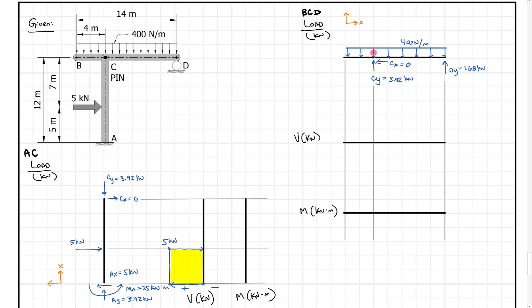For member BCD, we have a uniform load. Whenever we have a uniform load, we drop the shear diagram at the same rate — 400 newtons per meter, or 0.4 kilonewtons per meter. Starting at 0 at the left end, over 4 meters we drop 4 × 0.4 = 1.6 kilonewtons, ending at minus 1.6.